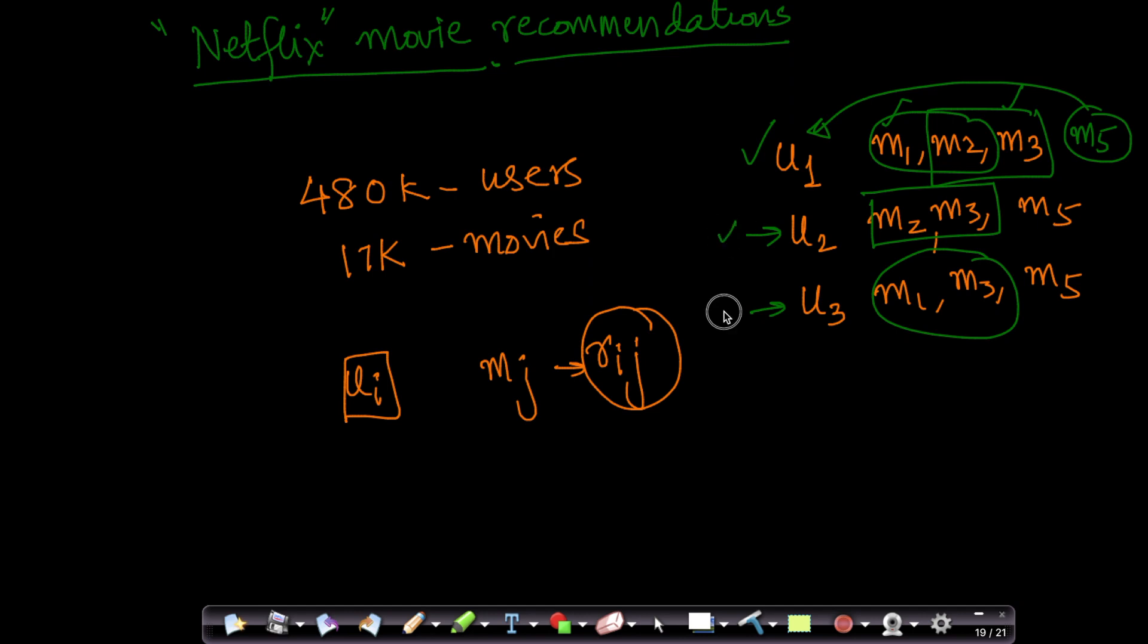Because this user - user 2 and user 3 - are very similar to user 1 in taste. User 2 loves movie 2 and movie 3 that user 1 also loves. User 3 likes movie 1 and movie 3 that user 1 likes. Now, given the fact that both user 2 and user 3 like movie 5, there's a very high chance that user 1 also could like it. That's our video recommendation.